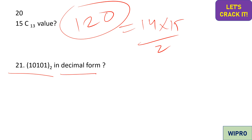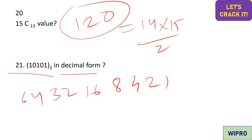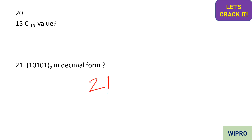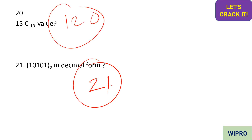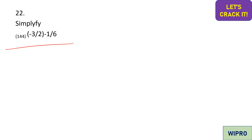Next, express a binary number in decimal form. Using the positional values 1, 2, 4, 8, 16, 32... add the values for all bit positions that are 1. In this case: 1 + 4 + 16 = 21. So 21 is the decimal answer.